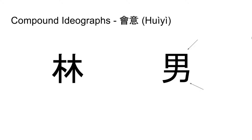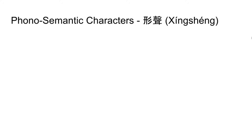These three scripts — pictographs, ideographs, and compound ideographs — however, only form a tiny fraction of the total Chinese lexicon. The vast majority of characters are actually Xing Sheng, or of a phonosemantic nature. That is, they have a part which represents pronunciation, and a radical which represents meaning.